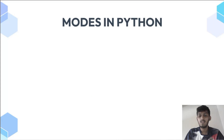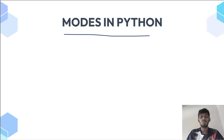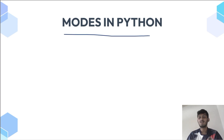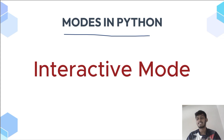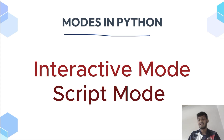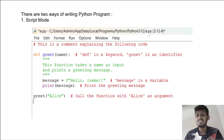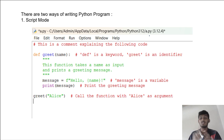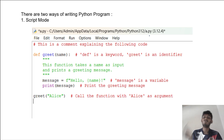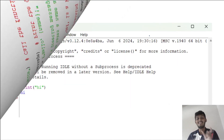Hello friends, welcome to this video. In this video we are going to see modes in Python. There are two types of mode: the first one is interactive mode and the second one is script mode. In script mode, you have to write the code, save it with extension .py, then run the code.